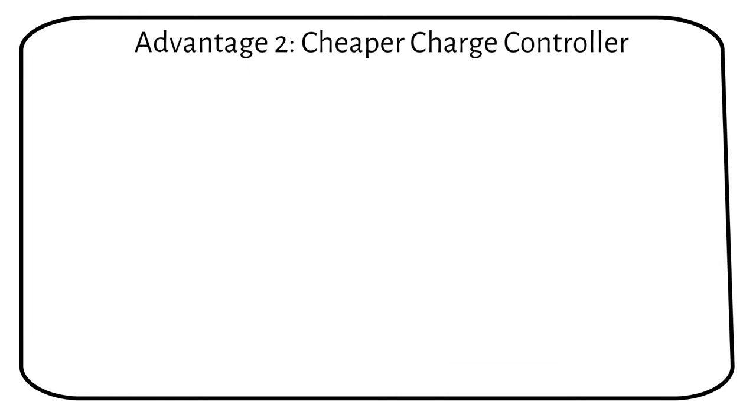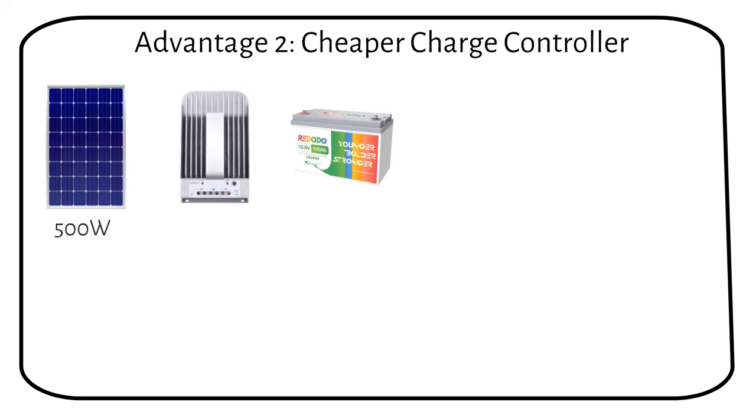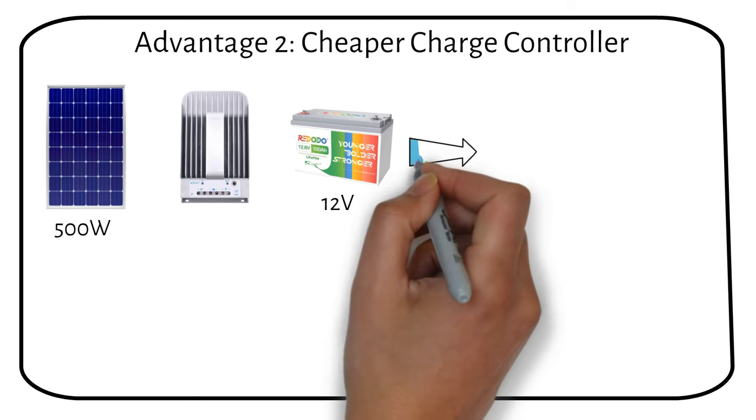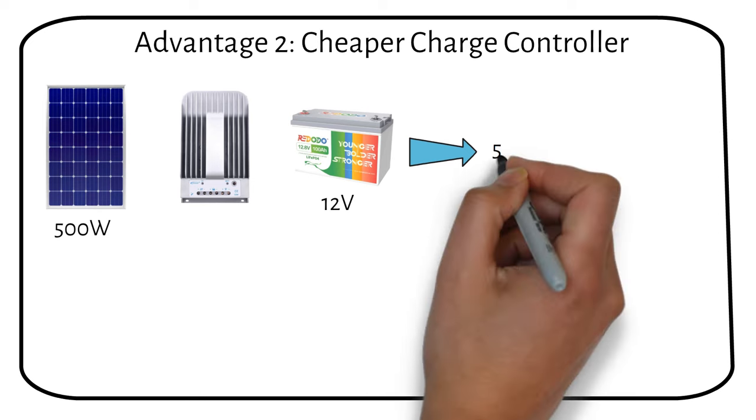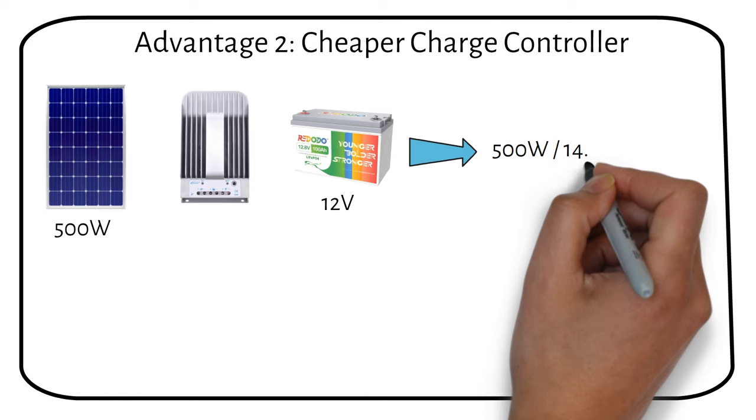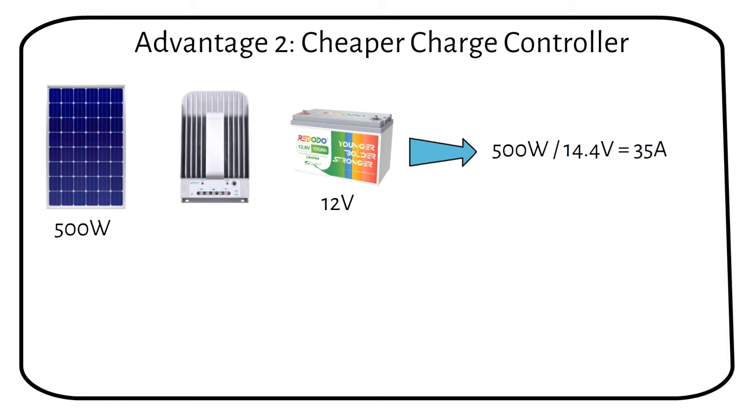The second benefit is that your charge controller will be cheaper. Let's say you have 500 watts of solar power and want to charge a 12 volt battery. The charging voltage of a 12 volt lithium battery is 14.4 volts. We use the following formula: 500 watts of solar divided by 14.4 volts equals 35 amps. A 40 amp EPever Tracer will cost you $180.